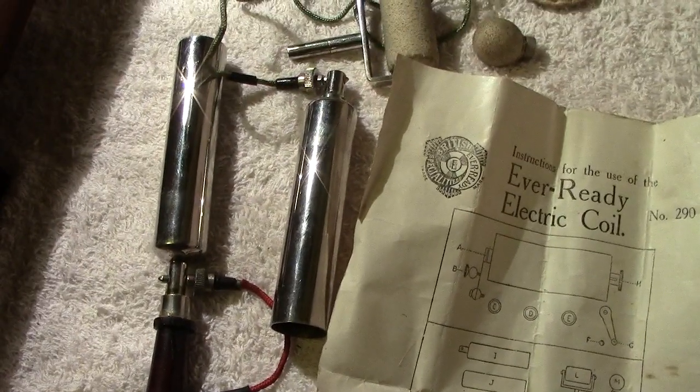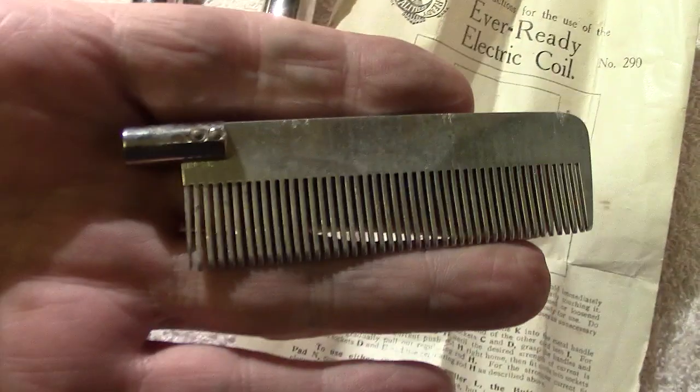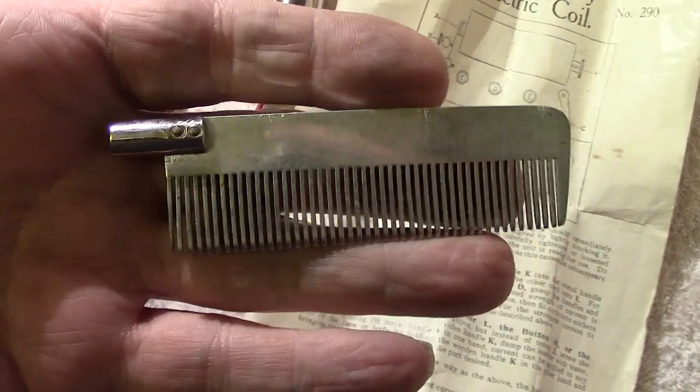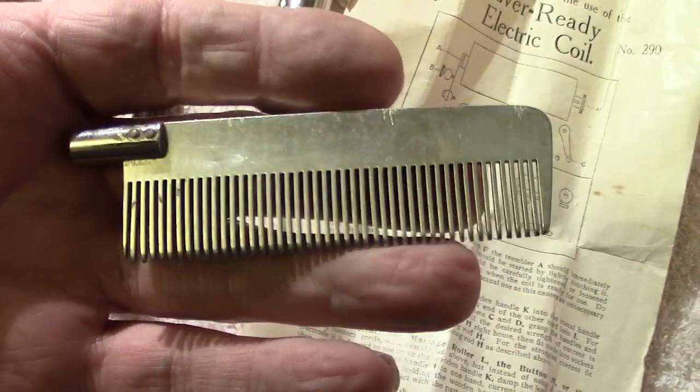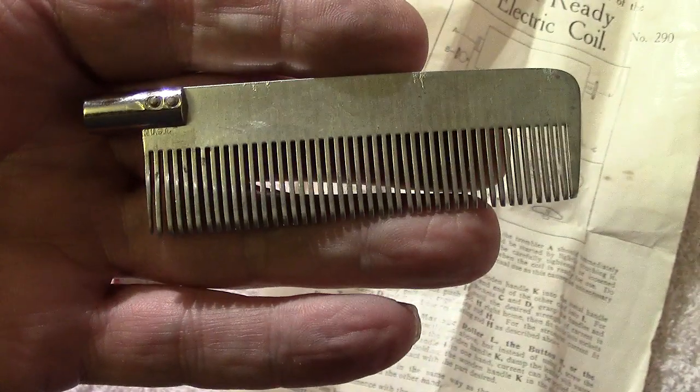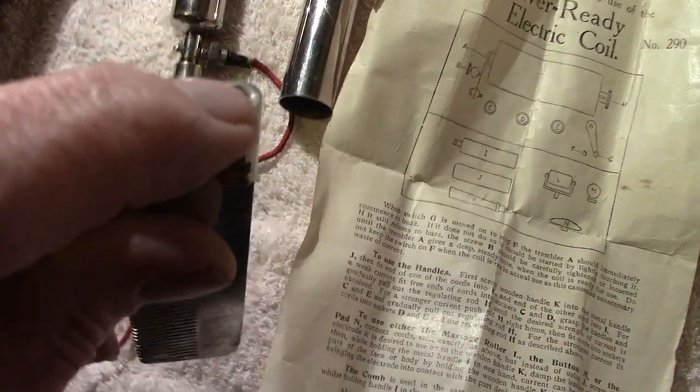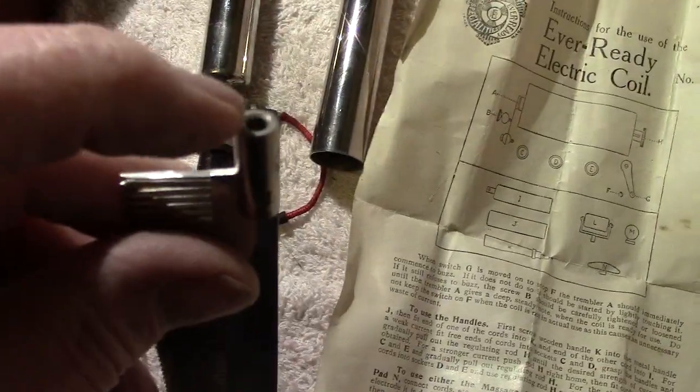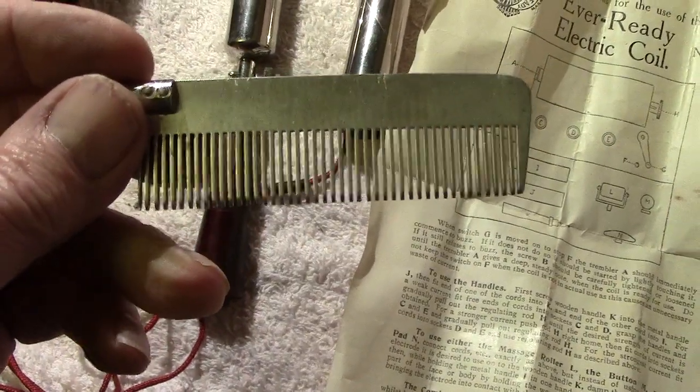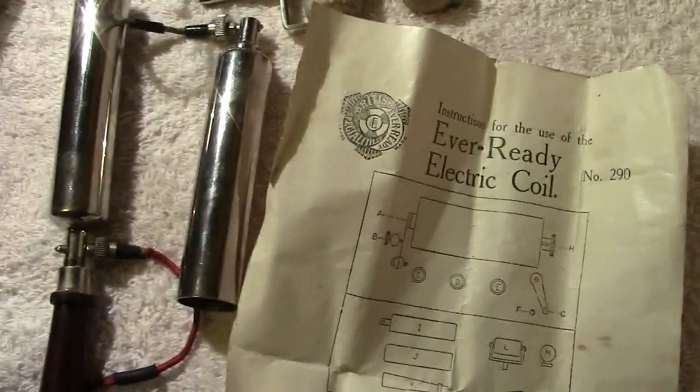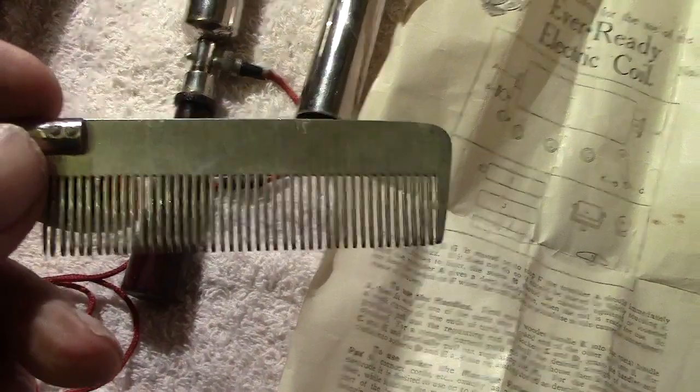So if you've got any bruises or aches and pains, you would place these near where the aches and pains were. If you had a smaller area, you've got a smaller one that screws into the handle. Lastly, you've got a comb. In those days they would think that combing your hair using electricity would make your hair grow, which once again is a load of rubbish but people believed it.